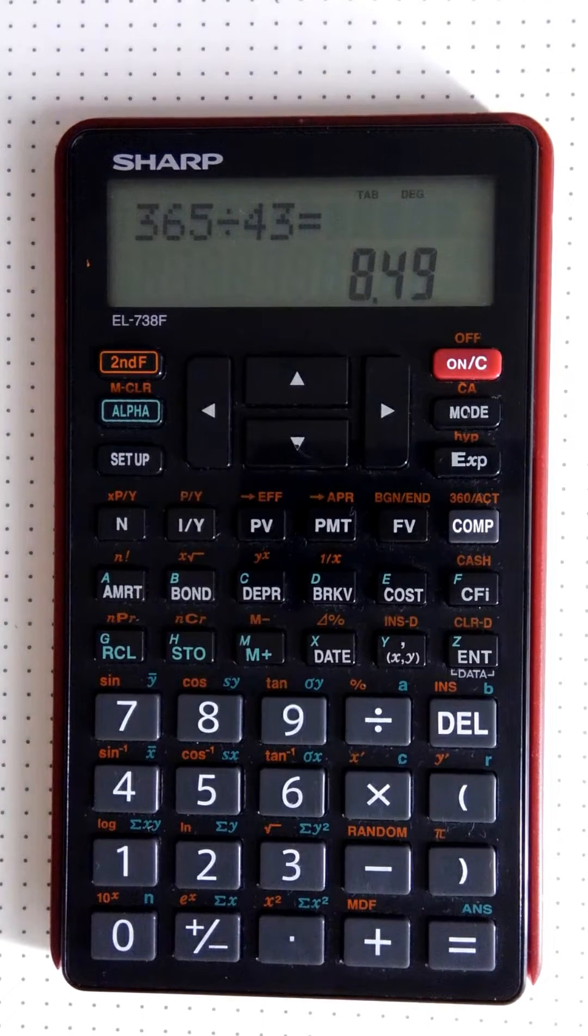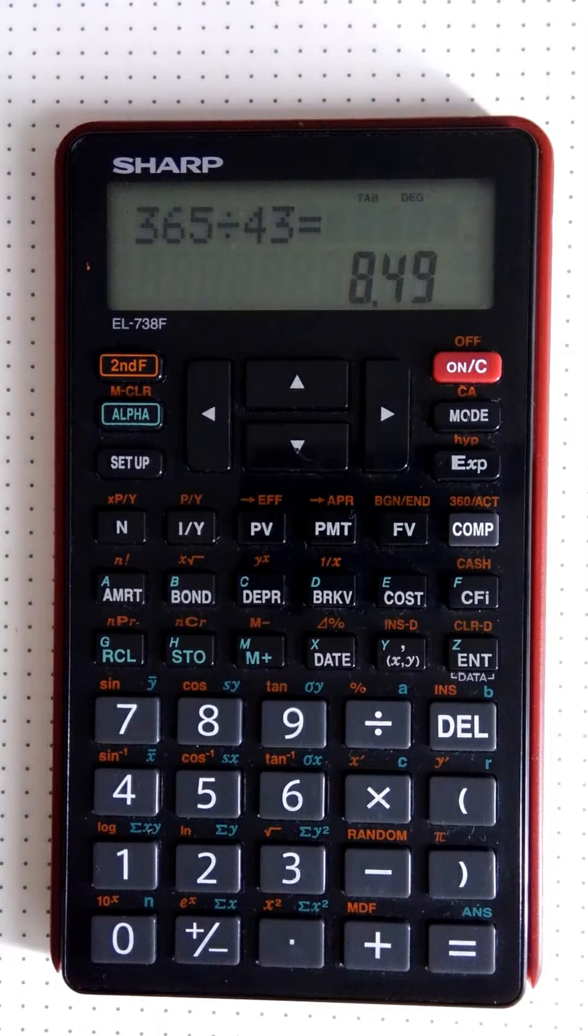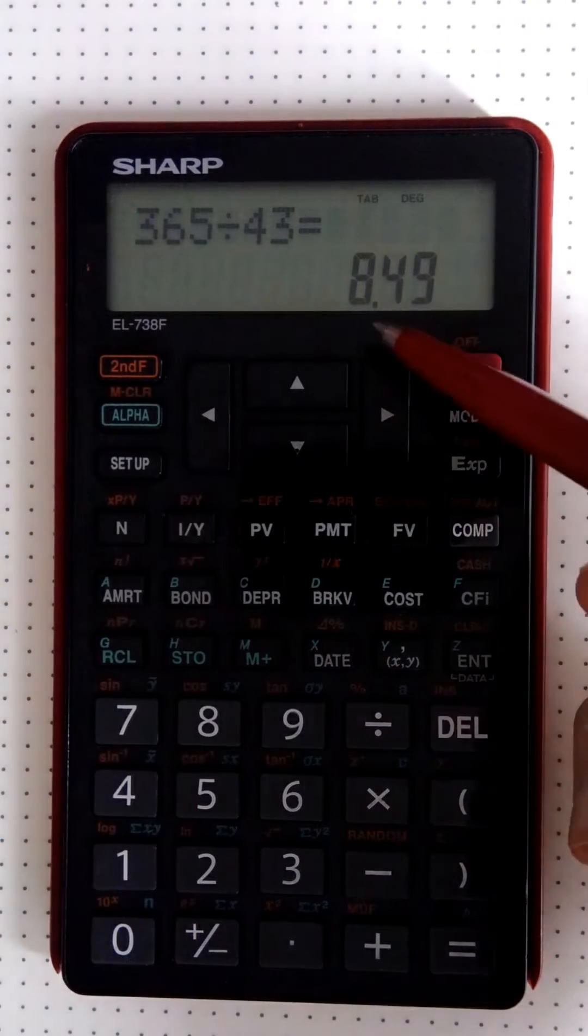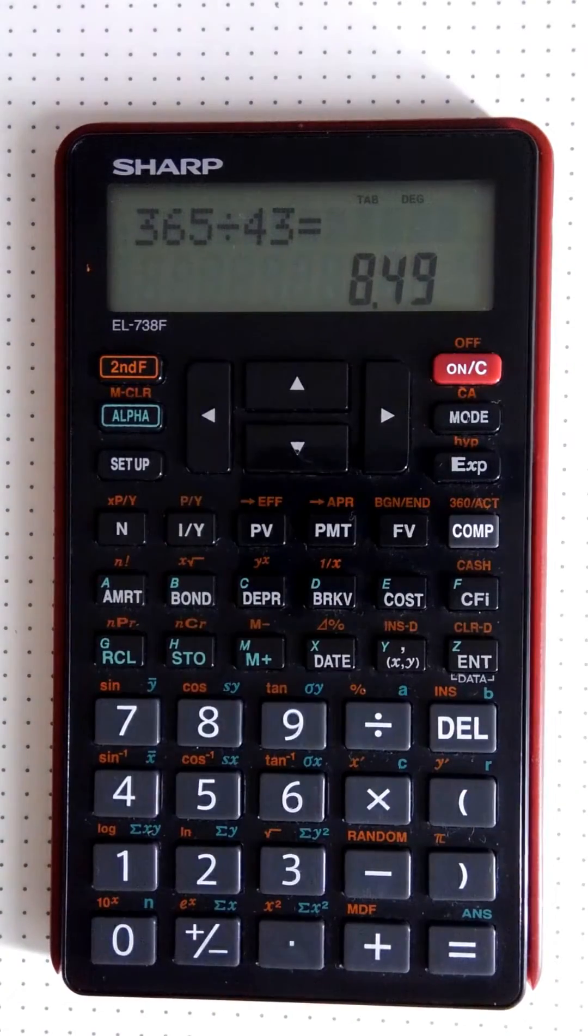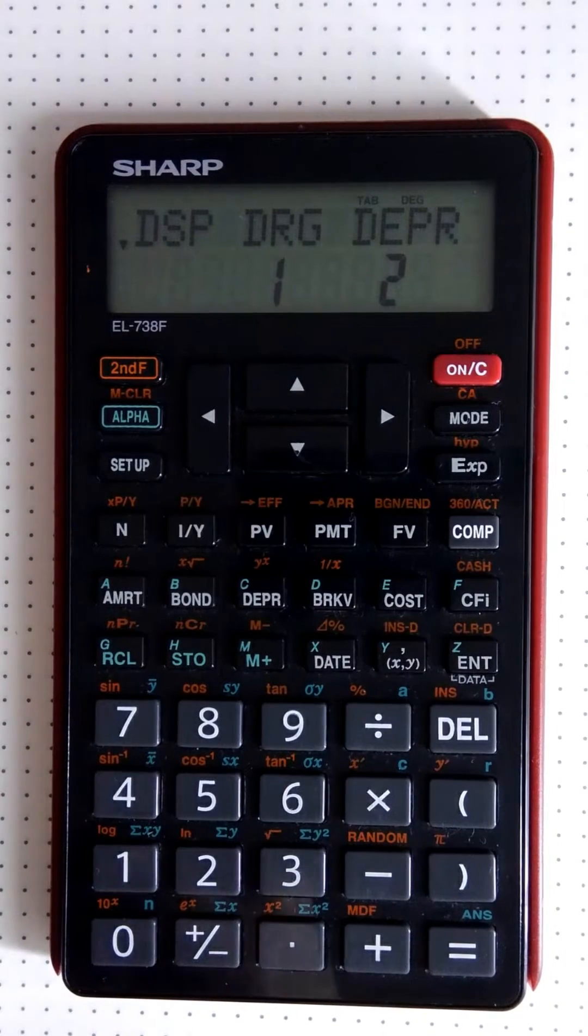Now if we want to see the extra digits, we will have to change the display of the financial calculator. We do this using our setup button.